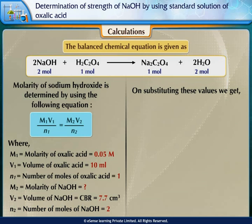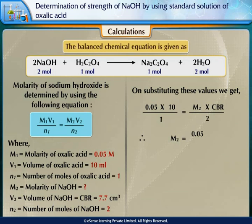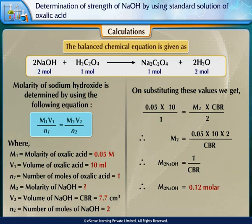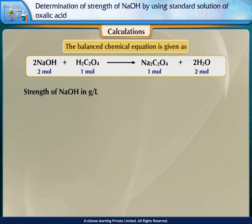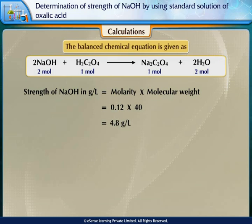Substituting these values: 0.05 × 10 / 1 = M2 × 7.7 / 2. Therefore M2 = (0.05 × 10 × 2) / 7.7, which gives M2 = 0.12 molar. Strength of sodium hydroxide in grams per liter = molarity × molecular weight = 0.12 × 40 = 4.8 grams per liter.